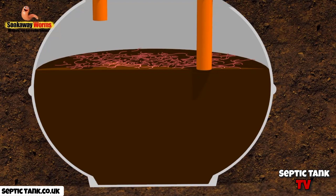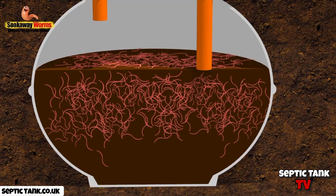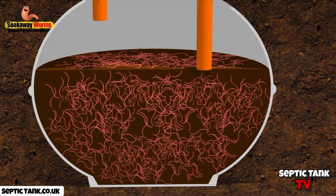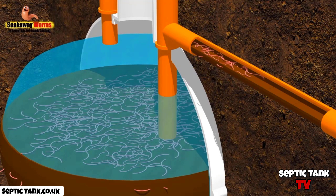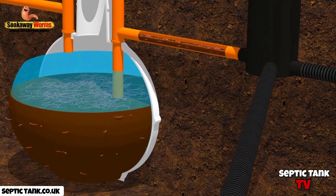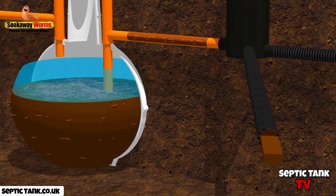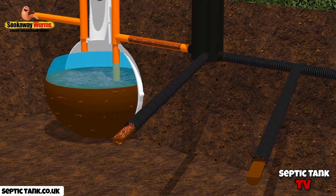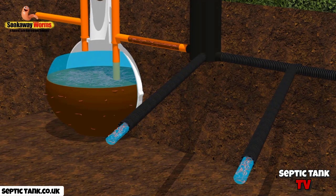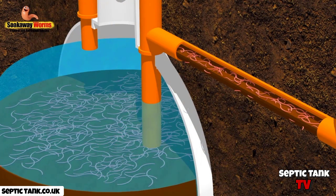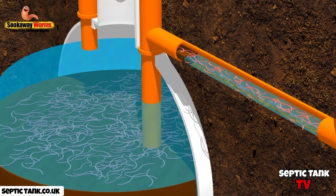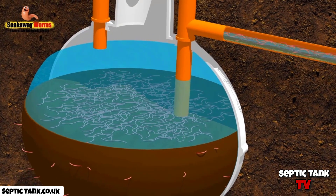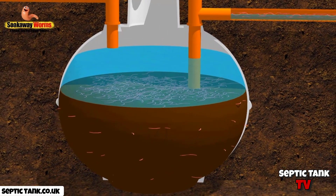The worms sink to the bottom of the tank, landing on top of the sludge. They quickly adjust to their new surroundings and start burrowing into the fat, grease, and sludge, breeding and multiplying. From there, these worms make their way deep into the main arteries of the soak away, reaching into all the nooks and crannies that rodding and jetting just cannot get to. As the worms eat all the fat, grease, and sludge, they clean and unblock the pipes, allowing wastewater to flow freely again and drain naturally into the topsoil.